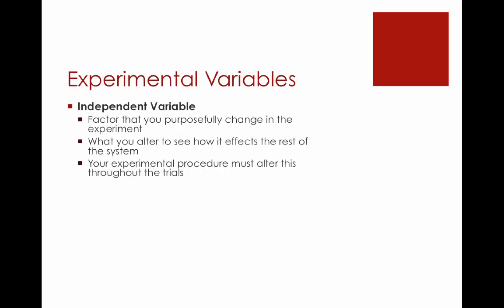The main work we're going to do here is identifying what the different types of variables actually mean. We'll start with the independent variable. The independent variable, by definition, is the factor that you purposely change during the experiment. You're altering the independent variable during the experiment to see how it affects the rest of the system. Your experimental procedure must alter this throughout trial to trial. So in each individual trial, your independent variable is going to change.